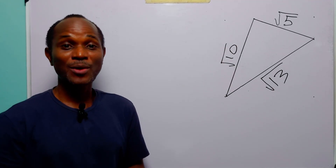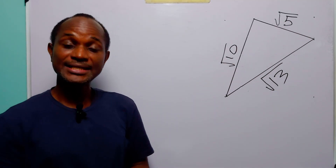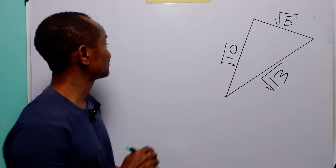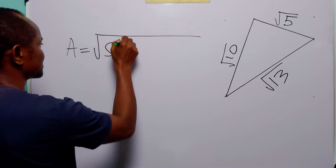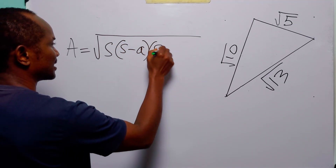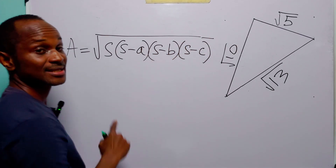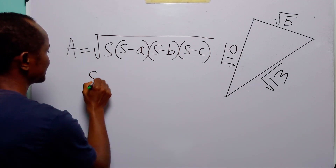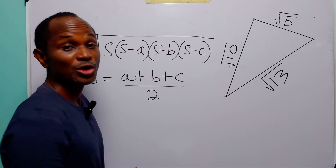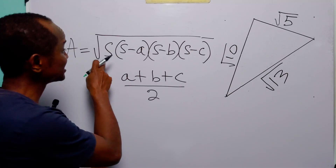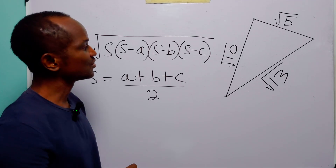Hello and welcome. Oftentimes when we are required to find the area of a triangle in which all three sides are given, the easiest way to do it is by using Heron's formula: area equals the square root of s(s−a)(s−b)(s−c), where a, b, and c are the three sides of the triangle and s equals (a+b+c)/2. But if we are to evaluate this formula using three very irrational numbers, it's going to be a nightmare.